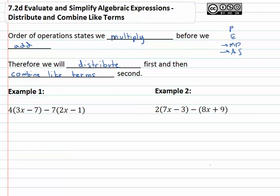So for example, if we see 4 times 3x minus 7, minus 7 times 2x minus 1, we know we must distribute first. Get rid of the parentheses.